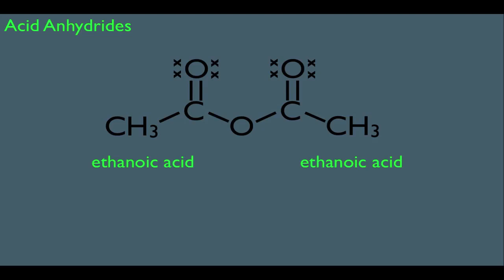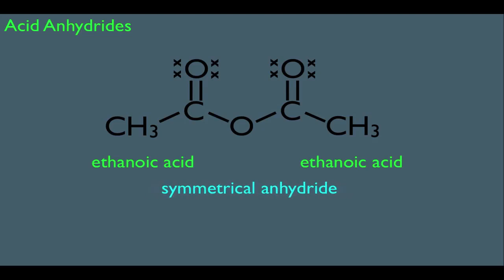And it's not just any anhydride — it happens to be a symmetrical anhydride. Notice there's a line of symmetry right through that center oxygen. We name symmetrical anhydrides a certain way. For instance, the name of this anhydride would be ethanoic anhydride. Notice the derivation from the carboxylic acid — it was ethanoic acid. We're simply keeping the ethanoic part, but dropping the word acid and replacing it with anhydride.